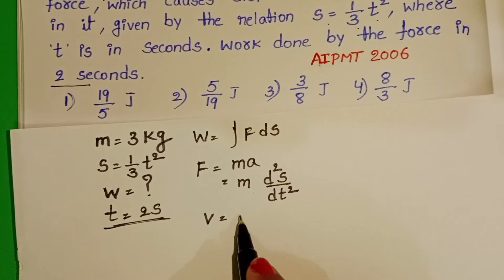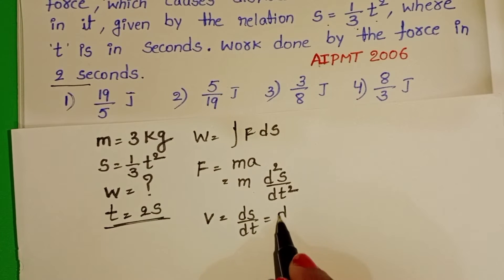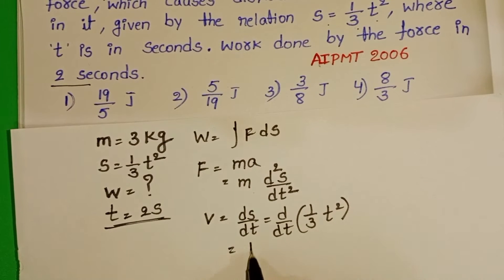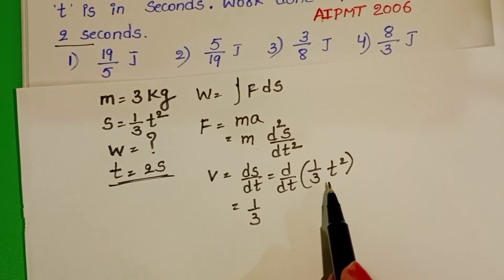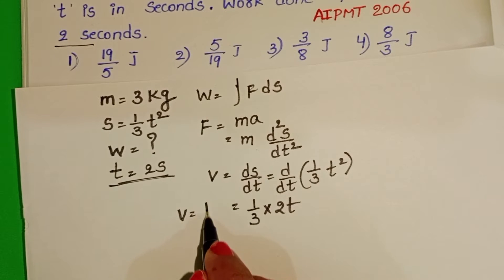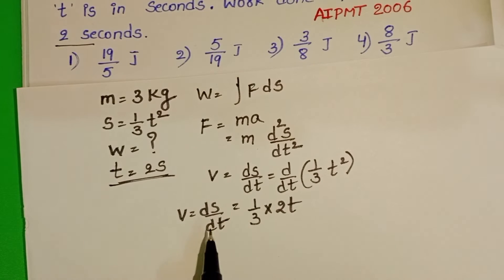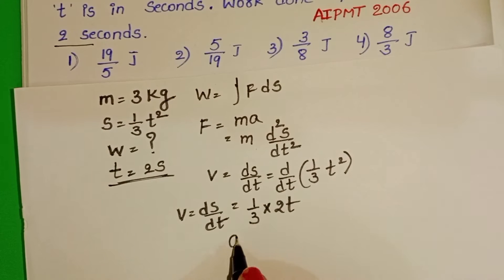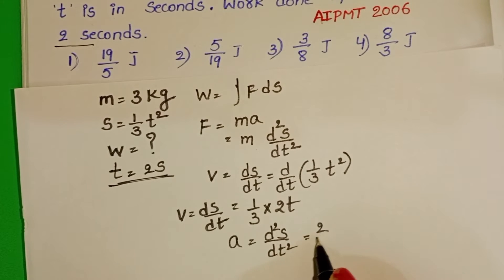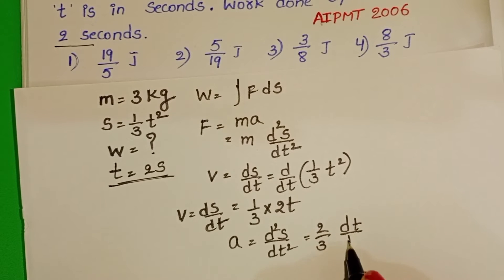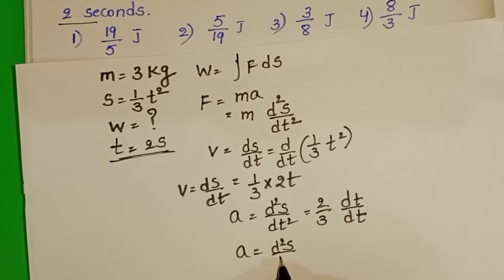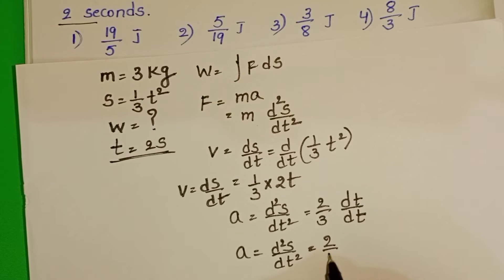Velocity equals the rate of change of displacement. We know S equals 1 by 3 T square. 1 by 3 is constant. D by dt of T square equals 2T. This is velocity, dS by dt. Again, differentiate velocity to get acceleration: a equals d square S by dt square, which equals 2 by 3.